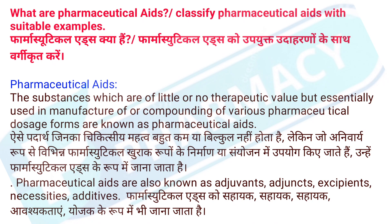Pharmaceutical aids are the substances which are of little or no therapeutic value but are essentially used in the manufacture of or compounding of various pharmaceutical dosage forms. Aisai padarth jinka chikitsiya mehatwa bhaut kam ya bilkul nahi hoota hai, lekin jo anivariya rup se vibhin pharmaceutical khuraak rupo ke nirman ya saiyojan me upyog kiya jatay hai, unhyeh pharmaceutical aids ke rup me jana jata hai.